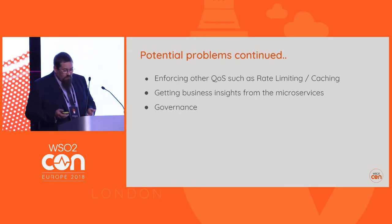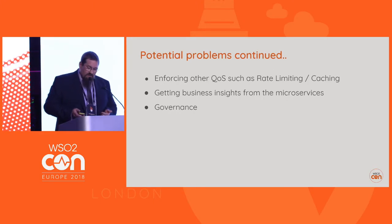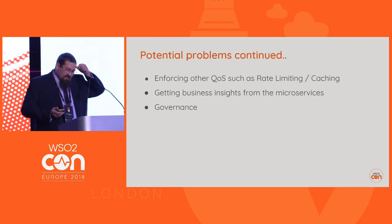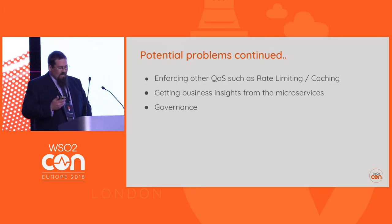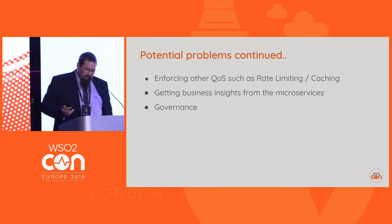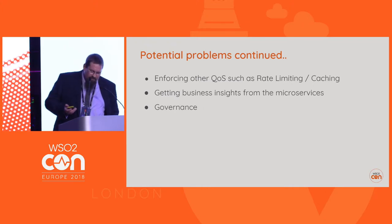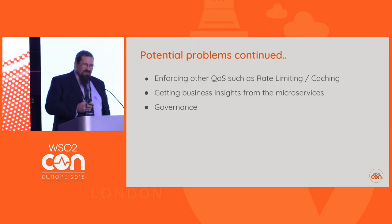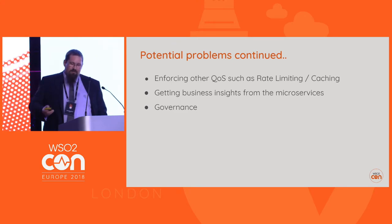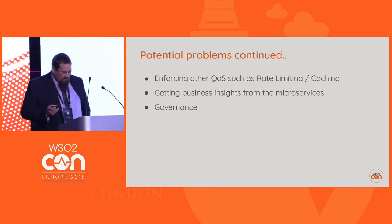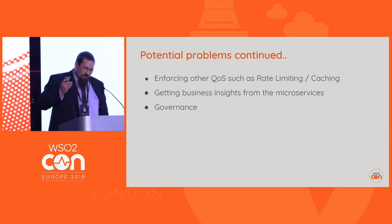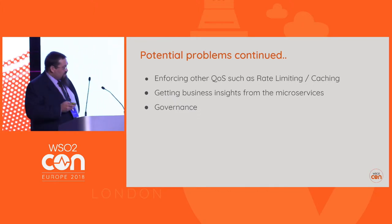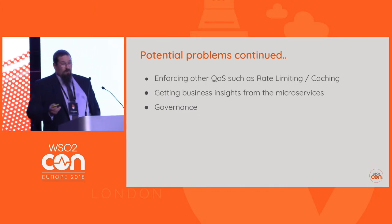A few other things — enforcing quality of service, rate limiting, caching, analytics, business insights, and governance of your microservices. Not necessarily a big problem at small scale, but as you scale up and it becomes more business critical, those issues are going to give you more and more pain.